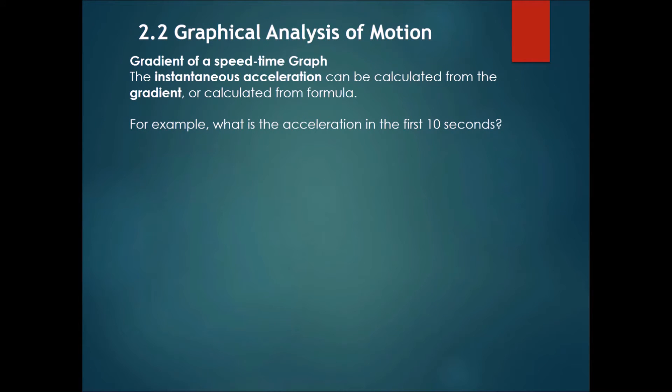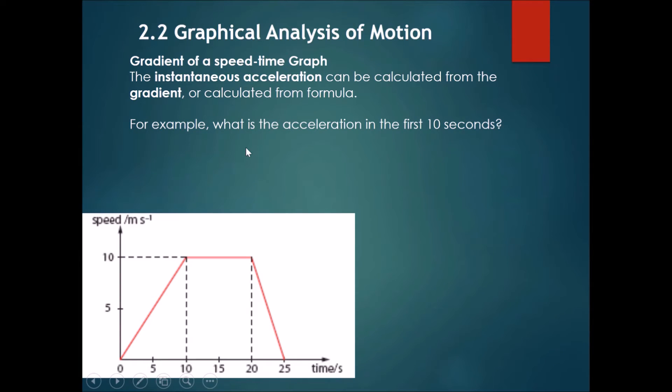Now, let's go to the second special move. Once again, we are using gradient. However, now we are using gradient of a speed-time graph. So the instantaneous acceleration of any part on the speed-time graph can be calculated as well. And this can be calculated from the gradient. It can also be calculated from the formula as well. If you have a speed-time graph and they ask you to find the acceleration, let's say at this point, or this point, or this point, what you have to do is to find the gradient of the graph at any of these points, and you will find the instantaneous acceleration.